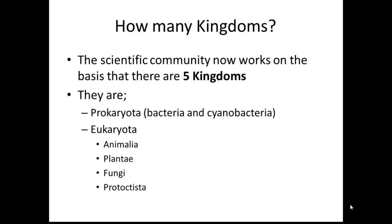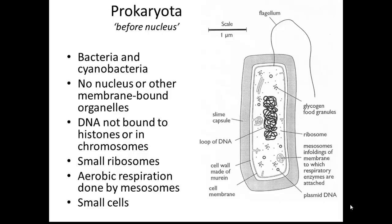So how many kingdoms are there? The scientific community now works on the basis that there are five kingdoms. They are prokaryota — those are the bacteria and cyanobacteria — and then eukaryota, in which there are four subdivisions, each of which is a kingdom in its own right, and we'll think about these in turn.